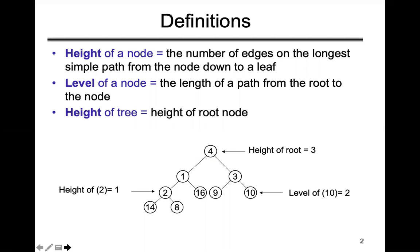Before going to heap sort we need to know the basic terminology of a tree. A tree is basically represented with nodes — in round form it is called a node, and the first node is called the root node. If you want to calculate the height of the root node, you count the edges. Here there is one edge, two edges, three edges — so the height of the root is three. For another node, the height is calculated by the longest edge path.